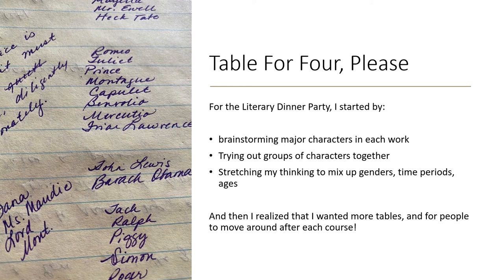I'm not annotating for you this week — I know, big change. I'd like you to look at the notes I took as I started to plan my dinner party. I brainstormed the major characters in each work: To Kill a Mockingbird, Romeo and Juliet, March, and Lord of the Flies. After brainstorming characters, I thought about trying out different groups of characters together, really working to stretch my thinking. I wanted to mix up genders, and consider what characters from different time periods would have to say to one another — would they agree, contradict, and what would they show about themes over time? I realized I needed more tables and more time to move people around, because there would be a lot of really good conversation.